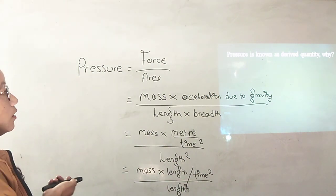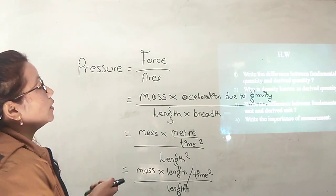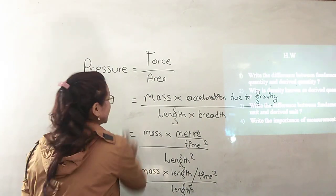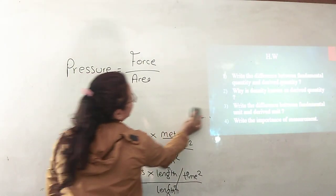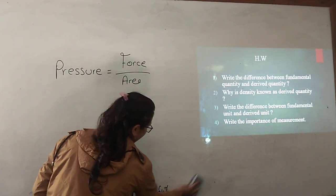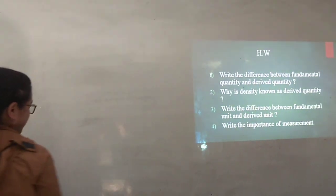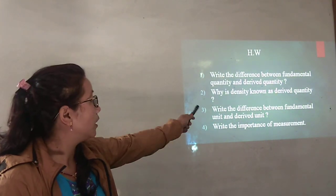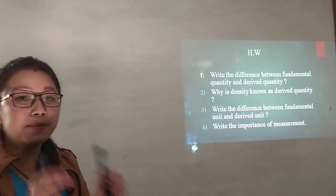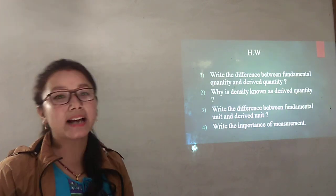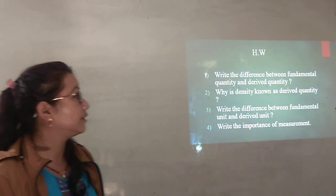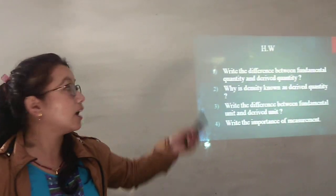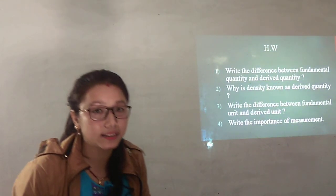Now this is for this class. Now here are some homeworks. There are some homeworks for you so that you have to learn it. Every homework: write the difference between fundamental quantity and derived quantity. Why is density known as derived quantity? These types of questions are mostly asked in unit 1. Then write the difference between fundamental unit and derived unit. Then write the importance of measurement. These are the questions that is mostly asked in the exam.